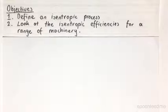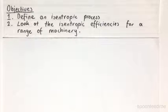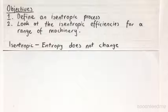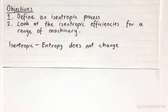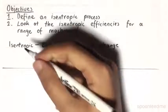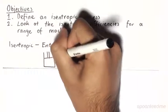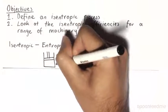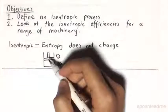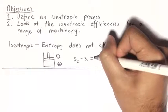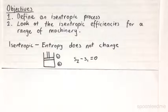So our first step is to define what exactly an isentropic process is. An isentropic process is a process where the entropy does not change. If we have a small piston cylinder arrangement that goes from state 1 to state 2, an isentropic process is where S2 minus S1 equals 0.